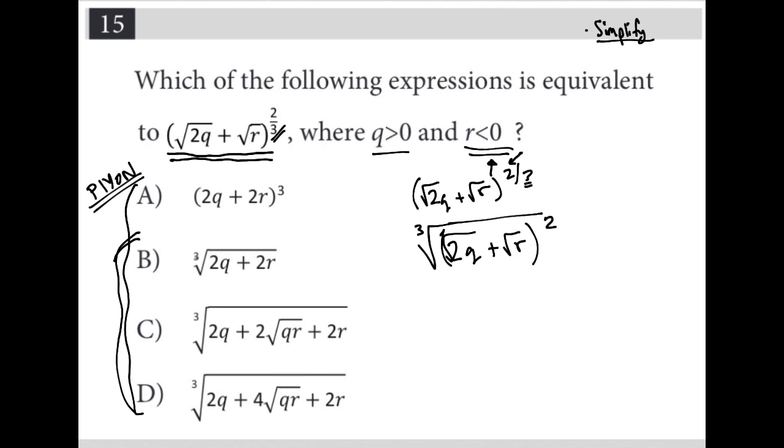So with that, I can simplify further by actually squaring what's under the cube root. So I still have my cube root, but then I'd have the square root of 2Q plus root R times itself, the square root of 2Q plus root R. Fill that all in. So now I can FOIL this by multiplying the first terms, square root 2Q times square root 2Q, which would just be a 2Q.